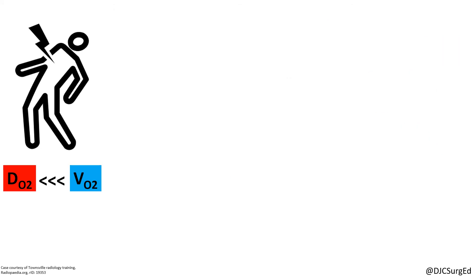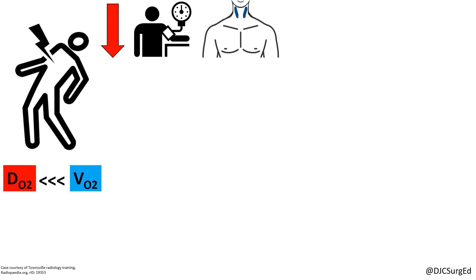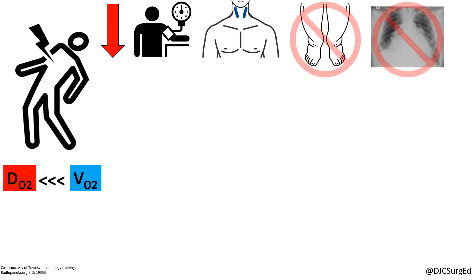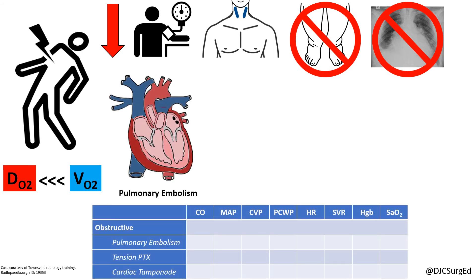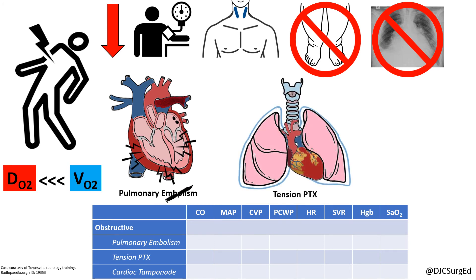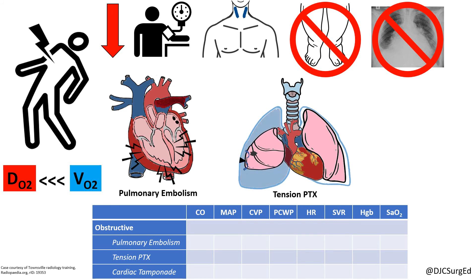Patients with obstructive shock usually have hypotension associated with distended neck veins but without clinical signs of fluid overload. A large pulmonary embolism can cause right heart strain or dysfunction and should be suspected with a history of pleuritic chest pain, acute dyspnea, and hemodynamic compromise. Tension pneumothorax occurs due to a ball-and-valve effect in which air enters but does not exit the thoracic cavity.